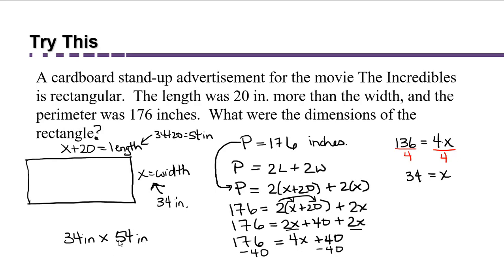Now if you wanted to, you could check what is 34 times 2 plus 54 times 2, and see if it adds up to 176 inches, the perimeter. And it does.